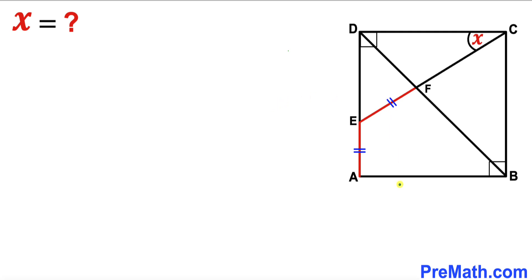In this video we have square ABCD such that BD is the main diagonal. Line segment AE is equal to line segment EF, and furthermore this angle FCD is represented by X. Our task is to calculate the value of this angle X.